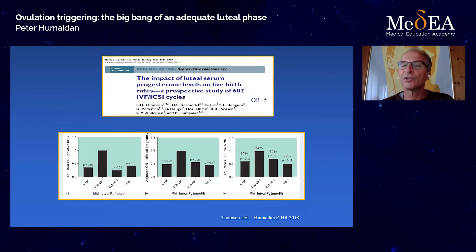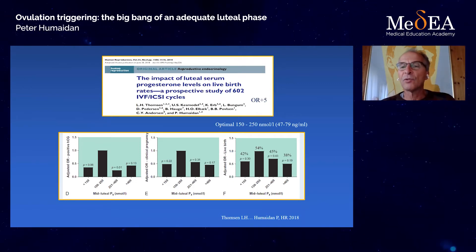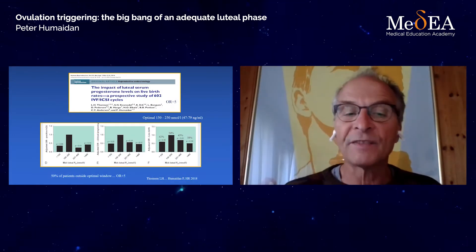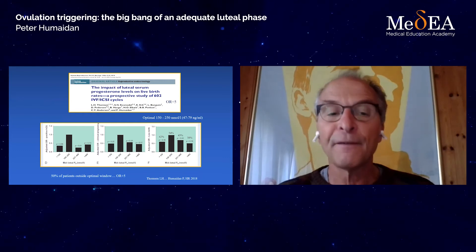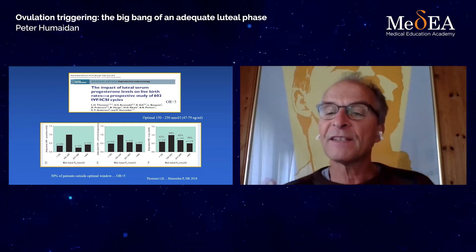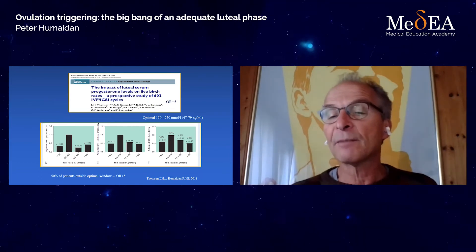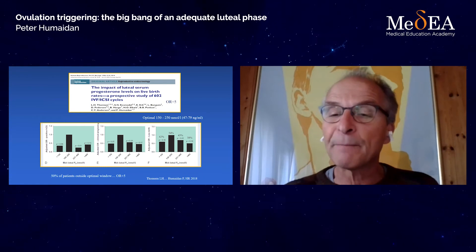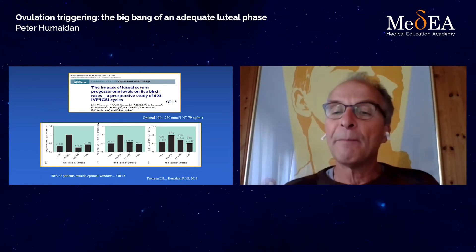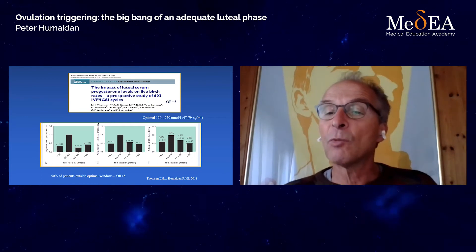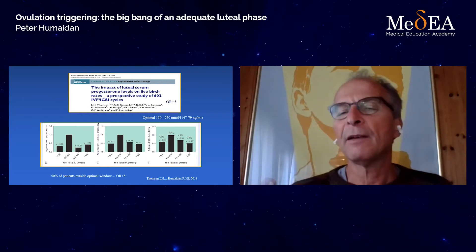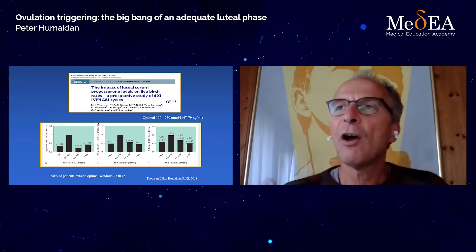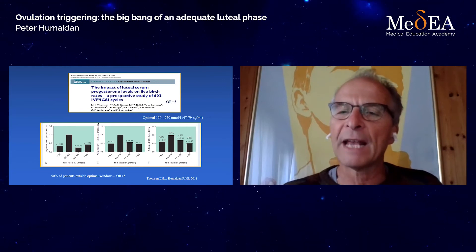There seems to be an optimal level around peri-implantation between 150 to 250 nanomolar. The scary thing was that only 50% of patients were inside this window — 50% were outside. This is why we tell ourselves that if we did some kind of monitoring, we would be able to find these patients and maybe do something. In the patients who were low, we could supplement. In the patients who were high, we would probably do a segmentation. Obviously, we need to do this in trials to see if supplementing with additional progesterone or doing segmentation actually has an impact.